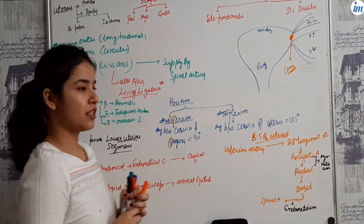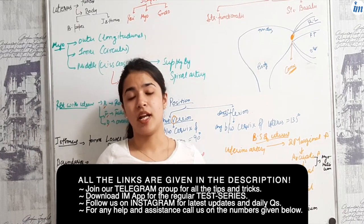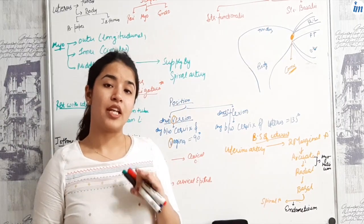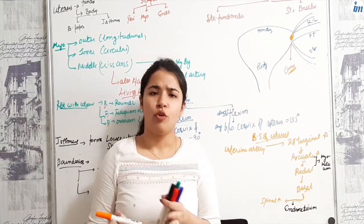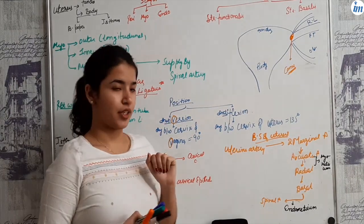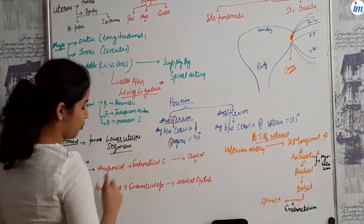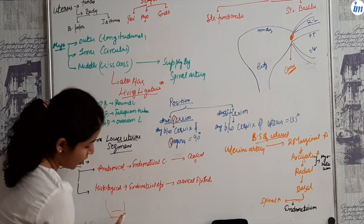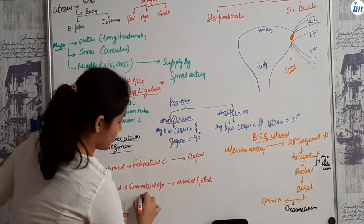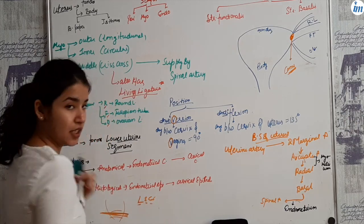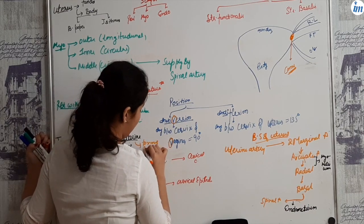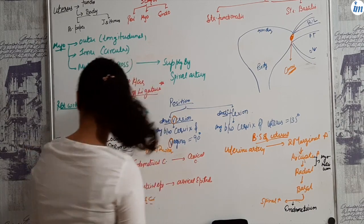Now the isthmus. Isthmus is the part between the body of uterus and the cervix. What is the main role? Generally, in pregnant women, it forms a lower uterine segment. In non-pregnant, it is not having much importance. In cesarean section, we will incise at this lower uterine segment. That's why cesarean sections are referred to as LSCS, lower segment cesarean section. Generally, this uterine segment is formed after 12 weeks.